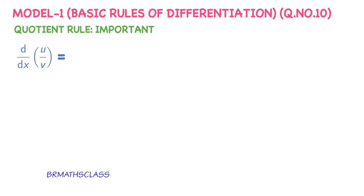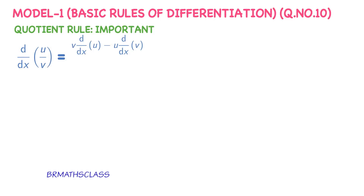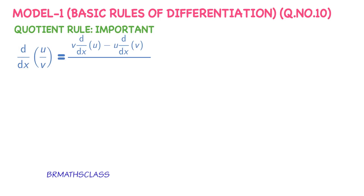What is the quotient rule? The derivative of u divided by v equals v times the derivative of u, minus u times the derivative of v, all divided by v squared. This formula is known as the quotient rule.